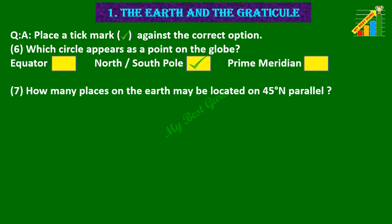7. How many places on the earth may be located on 45 degree north parallel? Options are 1, many, two. Correct option is many.